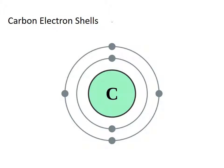Here's a picture of carbon's energy shells. In the first energy shell, which has a maximum of two electrons, there are two electrons circling the nucleus. In the second energy shell, we have four electrons. So we have two in the first and four in the second, making a total of six electrons — carbon's atomic number, equal to the number of protons and electrons.